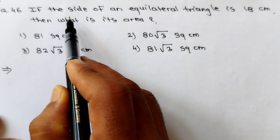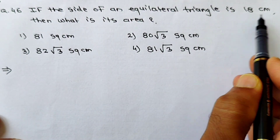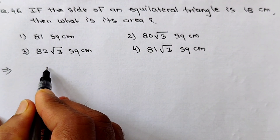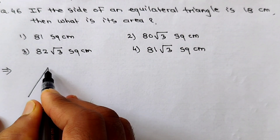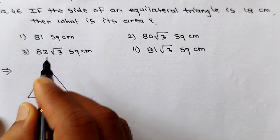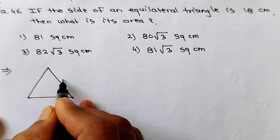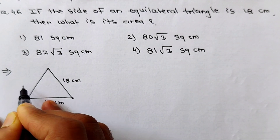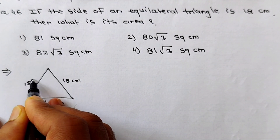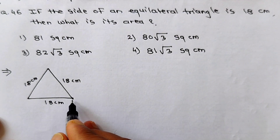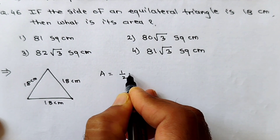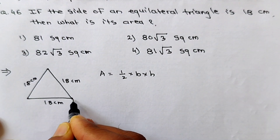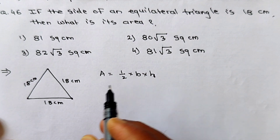See question number 46. If the side of an equilateral triangle is 18 cm, then what is its area? Equilateral triangle means all sides are equal. All sides are 18 cm. What is asked? The area of this triangle. For the area of a triangle, the formula is 1/2 × base × height, where B is the base and H is the height. Here, height is not given.